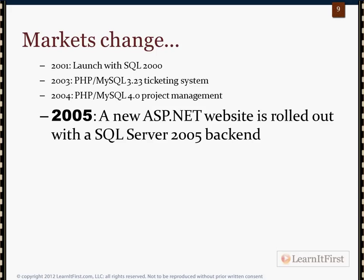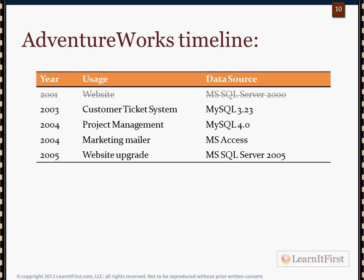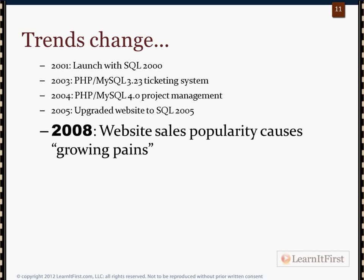In 2005 it's time to upgrade. ASP is getting a little long in the tooth, so they move to an ASP.NET website with a SQL Server 2005 backend — upgrading from 2000 to 2005. Their technology chart has been updated a bit, though they're still on MySQL 3.23, which really should have been migrated to 4.0 or 5.1 by now.